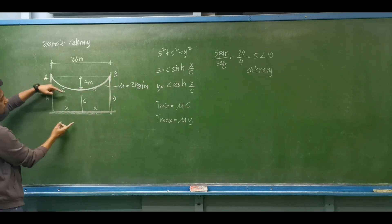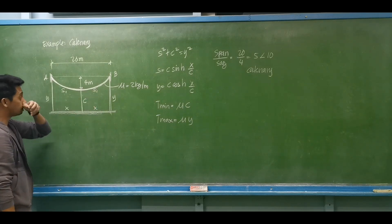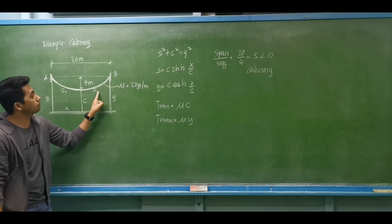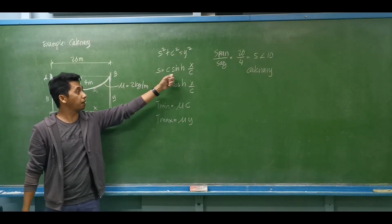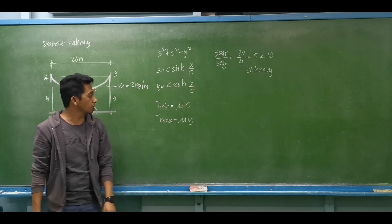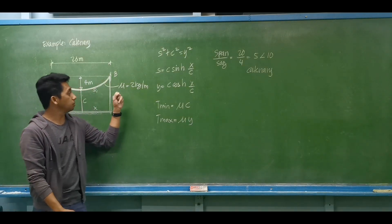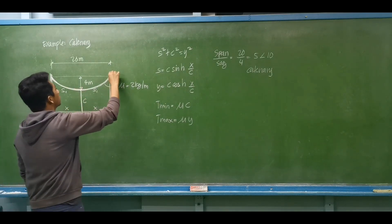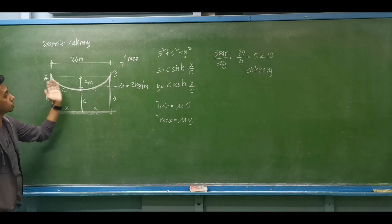For a catenary cable, we introduce the variables y, C, and S (half the actual arc length of the cable). The governing relations are: S² plus C² equals Y²; S equals C times hyperbolic sine of (x/C); and Y equals C times hyperbolic cosine of (x/C). The minimum tension T-min equals the uniform load μ multiplied by the value of C. The maximum tension T-max equals μ multiplied by the value of Y.